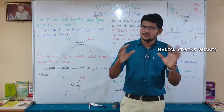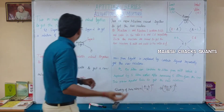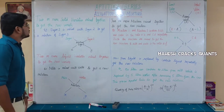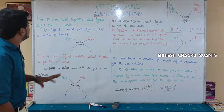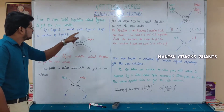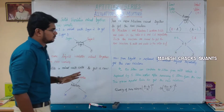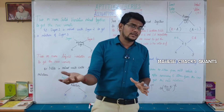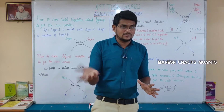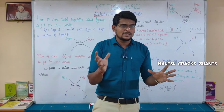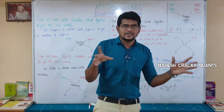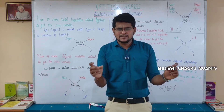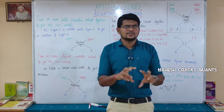What is the kind of questions? The first question: two or more solid varieties mixed together to get a new variety. Sugar 1 is mixed with Sugar 2 to get a mixture of Sugar 3. We ask about two types of solid things — solid things like sugar, rice — we have all different kinds. We have to mix two different qualities.